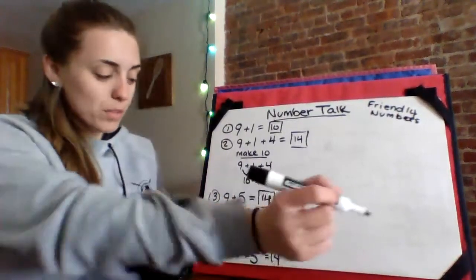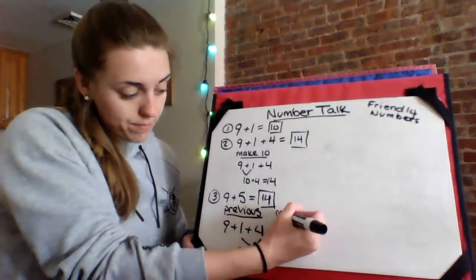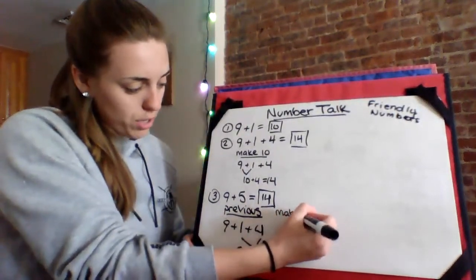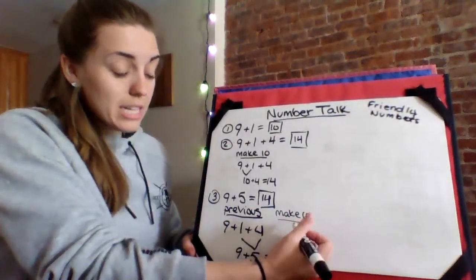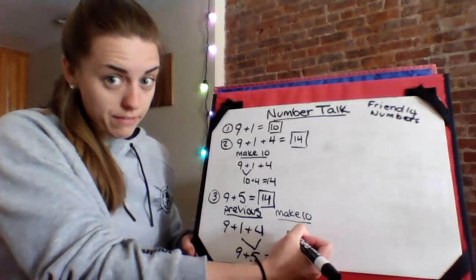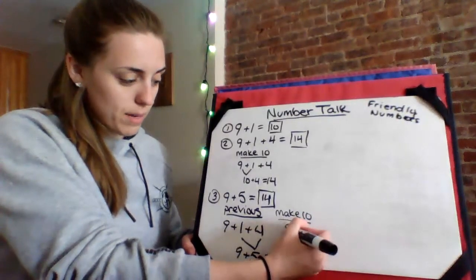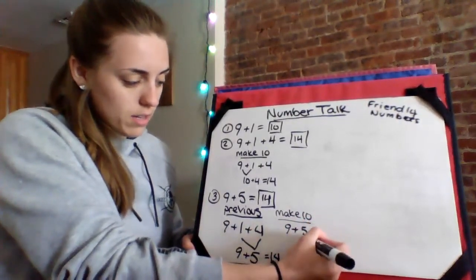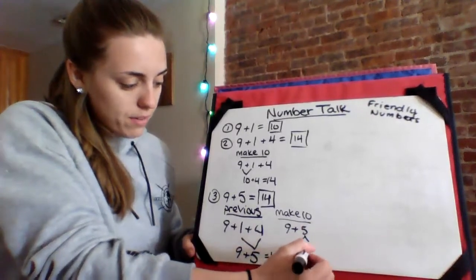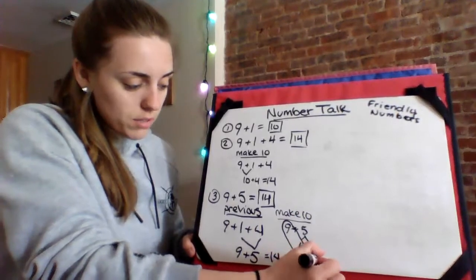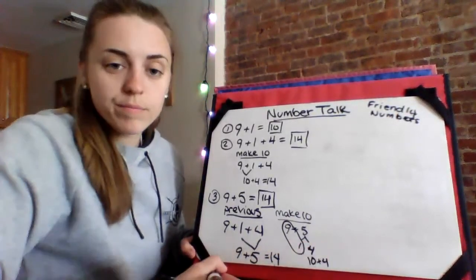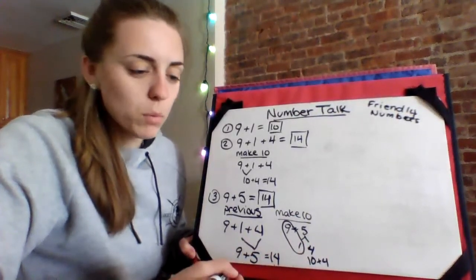Nice job. You also could have, if you wanted, if your brain thinks this way, you could have made a ten by decomposing the five. And I know we've talked about this, right? You could borrow one from the five to make ten. And then you have ten plus four. We'll get there. We're working on it.